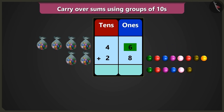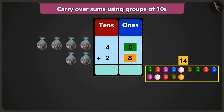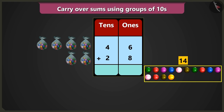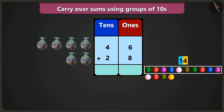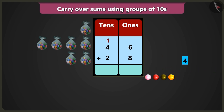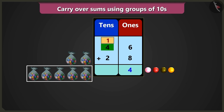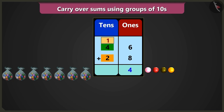Now in the box of ones, to add 6 ones and 8 ones, after 6: 7, 8, 9, 10, 11, 12, 13 and 14 marbles. Now 14, that is 1 ten and 4 ones. So from 14, we will take 1 ten and write it on top in the box of tens in small letters, and write 4 ones in the box of ones. Now in the box of tens, adding 1 ten and 4 tens we get 5 tens, and adding 5 tens and 2 tens will be 7 tens, that is 70.